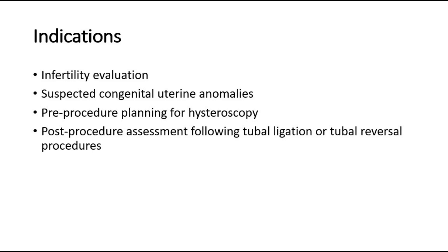The second indication is when there are suspected congenital uterine anomalies such as septate, bicornuate, or unicornuate uterus, and this can be detected with HSG.